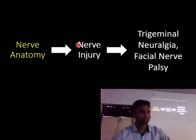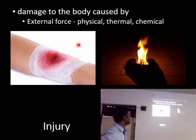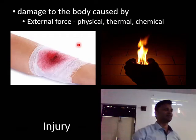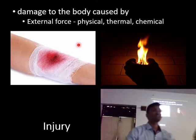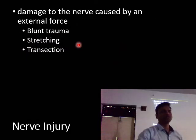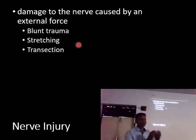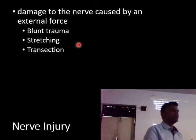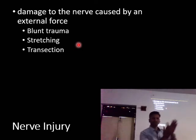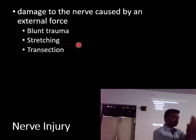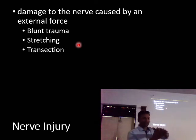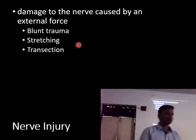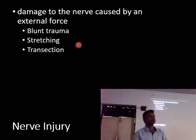Now we come to the nerve injury part. Injury is damage to the body caused by an external force — it can be physical, thermal, or chemical. Similarly, nerve injury is damage to the nerve caused by an external force. That force can be blunt trauma, stretching, or transection. For blunt trauma, an example is IOAB surgery where the inferior alveolar nerve is close to the third molar roots — elevating the third molar applies pressure on the nerve. This won't cause total discontinuity but will cause inflammation and demyelination.